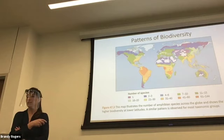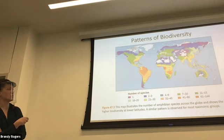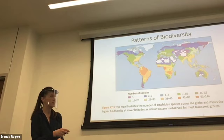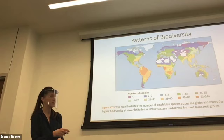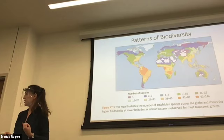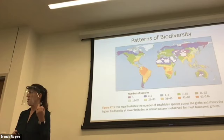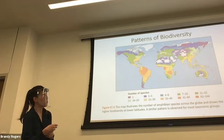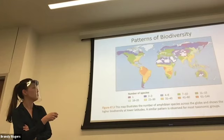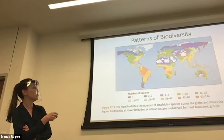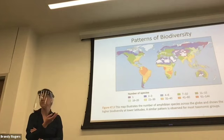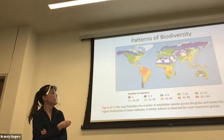This biodiversity pattern map illustrates the number of amphibian species. We've seen similar maps for net primary productivity and mammal distribution. You see the same striping — latitude correlated with diversity. Highest levels of amphibian biodiversity are around the equator, and as you get towards the poles the number of amphibian species drops, just like we've seen with mammals and net primary productivity.